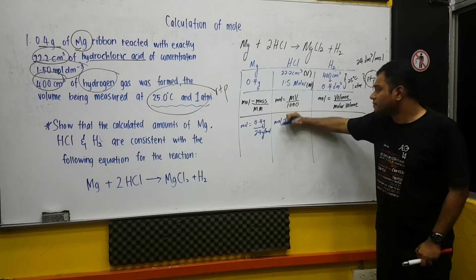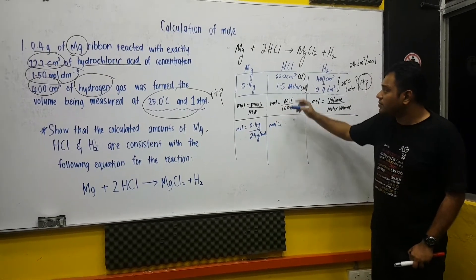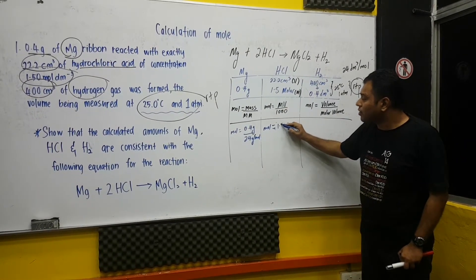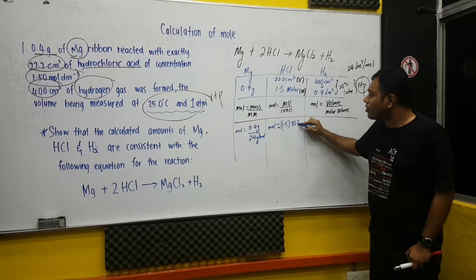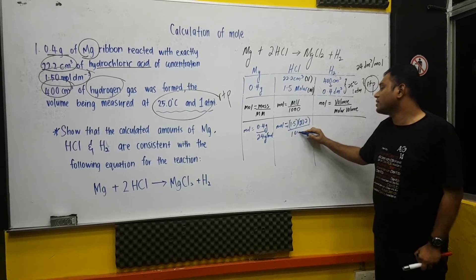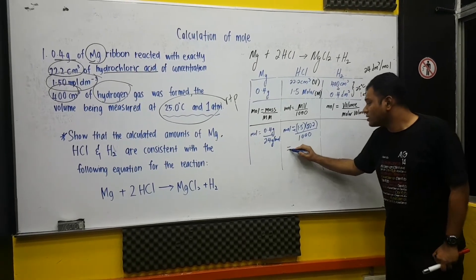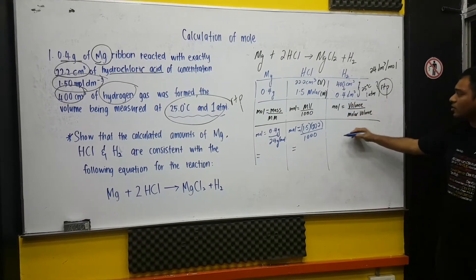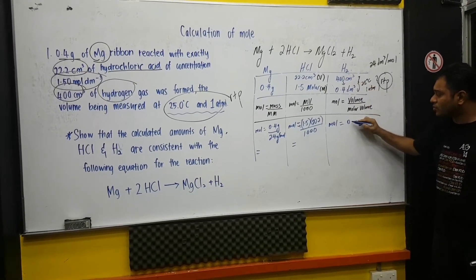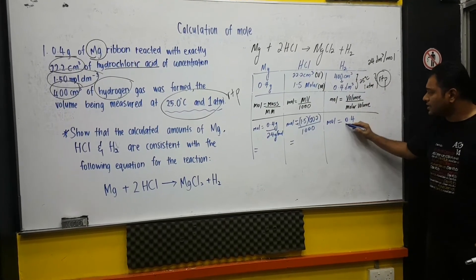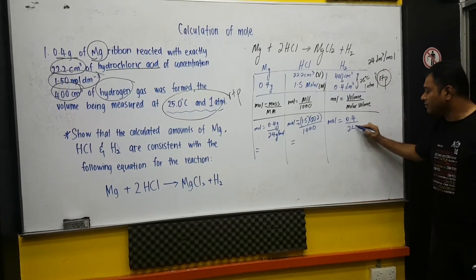And on the other hand, we have this. Mole equivalent to 22.2. And of course, the molar, sorry, molarity and volume. So it should be 1.5 multiplied with the volume 22.2 subdivided with 1000. Then, of course, we will calculate. And over here, mole, again, you get 0.4 and subdivide by 24.